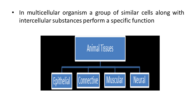Hello students, from this lecture we are going to start Chapter 7: Structural Organization in Animals. Animals may be unicellular or multicellular. In unicellular animals, only one cell performs various functions. But in higher multicellular organisms, tissues are present and they perform various functions. A group of similar cells along with intercellular substances that perform a specific function is known as tissue.